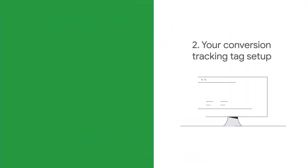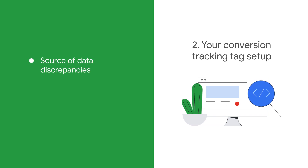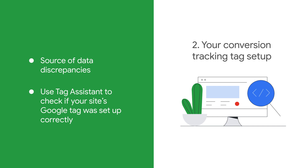Your conversion tracking tag setup could be a source of data discrepancies. Use Tag Assistant to check if your site's Google tag was set up correctly.